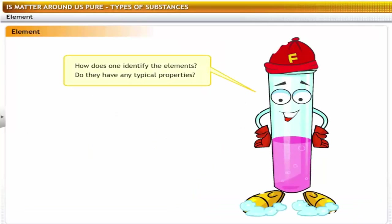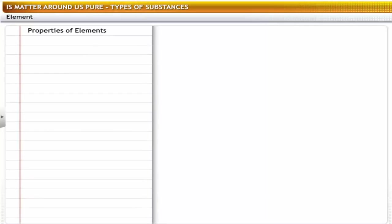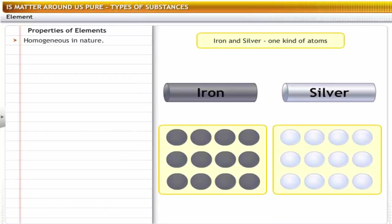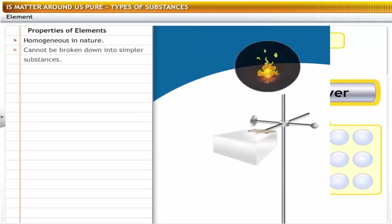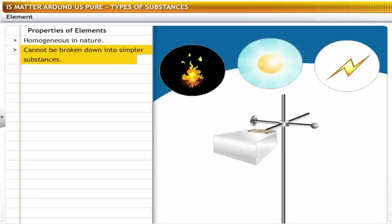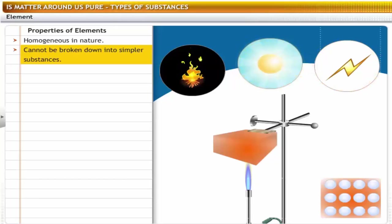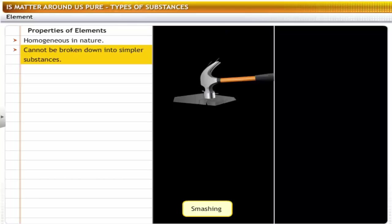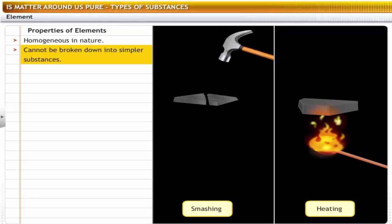How does one identify the elements? Do they have any typical properties? Yes, they do have typical properties. An element is homogeneous in nature. It is a pure substance made up of only one kind of atom — for example, iron and silver are made of only iron and silver atoms. An element cannot be broken down into simpler substances by any physical or chemical methods such as heat, light, electricity, or chemical reactions with other substances. For example, if you smash a piece of iron into small pieces or heat it, it still remains as the element iron.